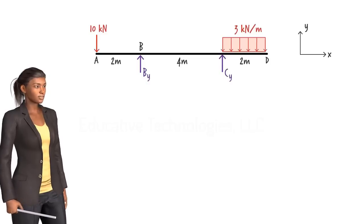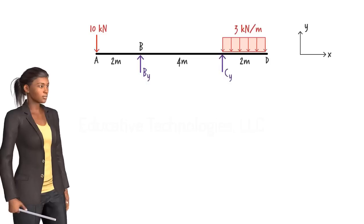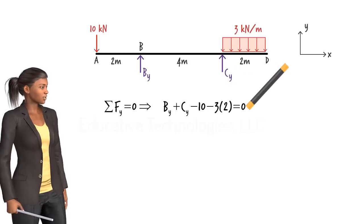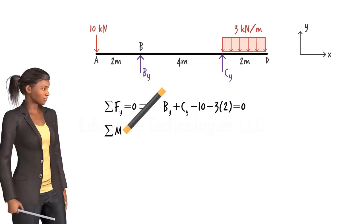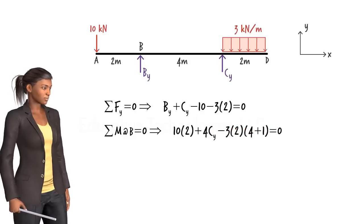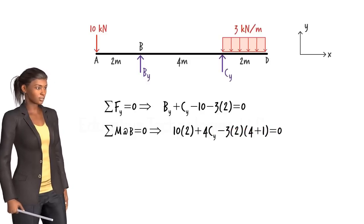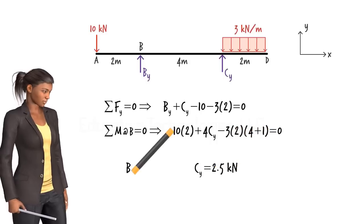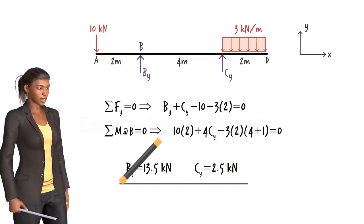We need two equilibrium equations in order to be able to calculate these unknown forces. The sum of the forces in the y direction must be zero. The sum of the bending moments about point B must be zero. Solving these equations for the unknowns, we get 2.5 kN for Cy and 13.5 kN for By.